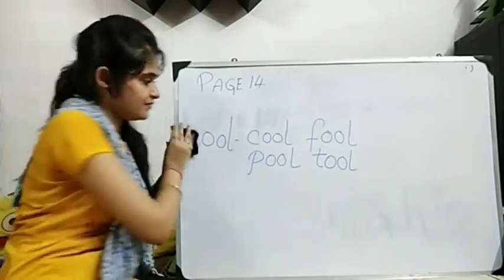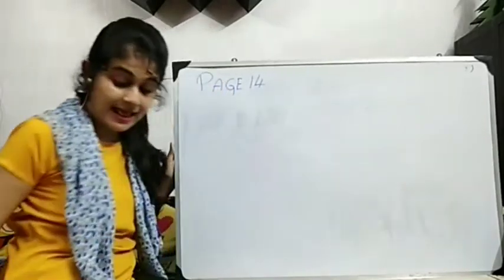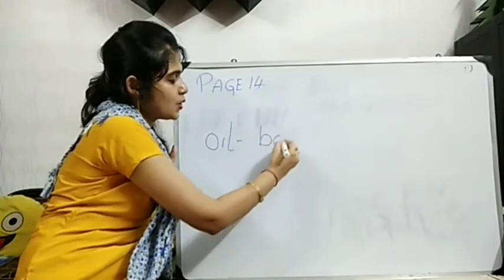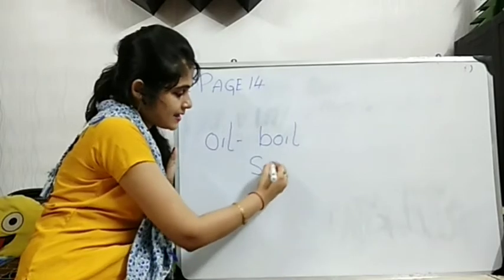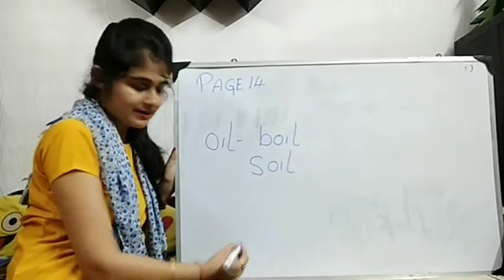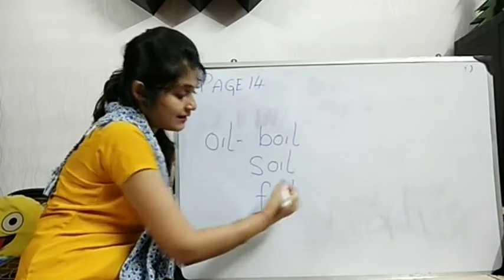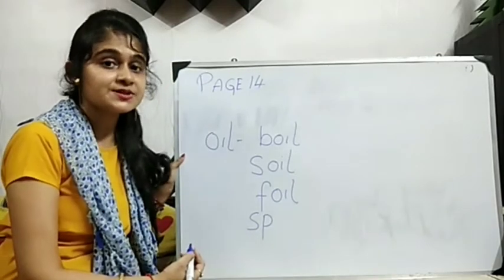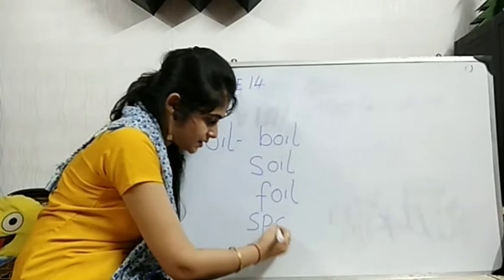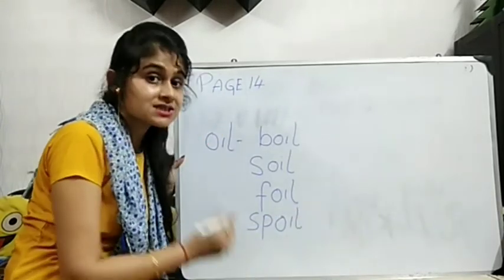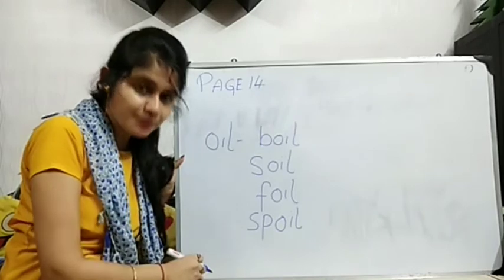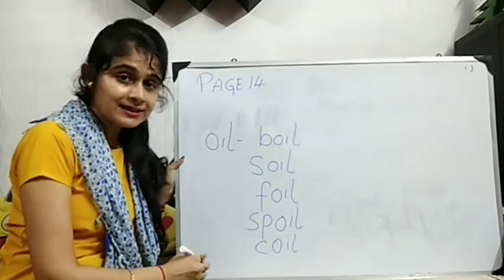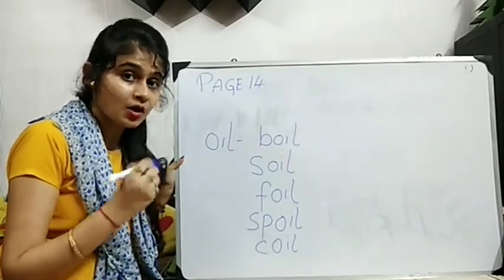So, the last one we will do now. O-I-L. O-I-L. O-I-L. B-O-I-L. Boil. S-O-I-L. Soil. F-O-I-L. Foil. S-P. S-P together. How you pronounce? S-P. S-P. S-P-O-I-L. Spoil. Spoil. Then P. Spoil. Clear? And C-O-I-L. Coil. C-Cat. Coil. Cot. Coil. Okay?